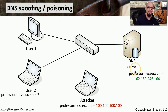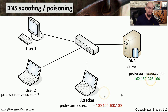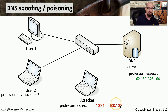The DNS server has the legitimate IP address of ProfessorMesser.com as 162.159.246.164. But the attacker would like the IP address of ProfessorMesser.com to resolve to 100.100.100.100, which is probably a web server that is under their control.